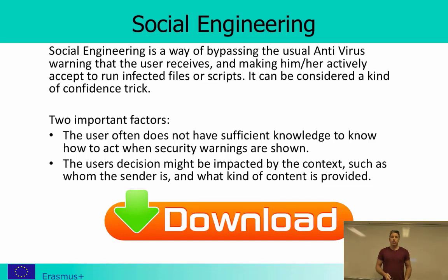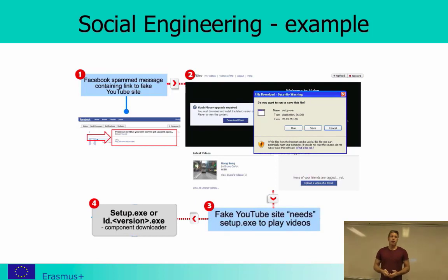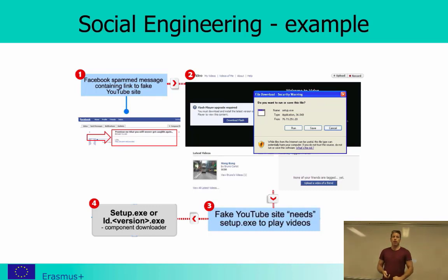With antivirus, if the user can overrule it, social engineering is about tricking them into overruling it — for example to install a file. One example: the user receives a message on Facebook saying 'watch this funny video.' As soon as they click on the video they receive a warning that they need to update Flash Player. Flash Player is something we are so used to updating that many users will click 'run' instead of 'no,' and by clicking yes, the user gives permission to install a piece of malware.